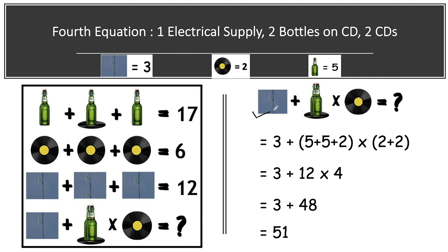In the final equation, we have one electric supply, two beer bottles lying on a CD, multiplied by something. Looking carefully, there are two CDs — one at the front and one at the back. So the electric supply is three, the two beer bottles give five plus five, the CD at the bottom adds two, and in the multiplication we have two CDs: two plus two.